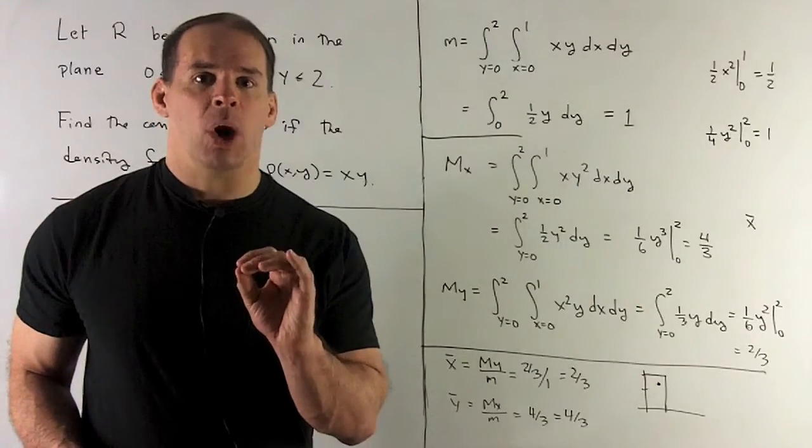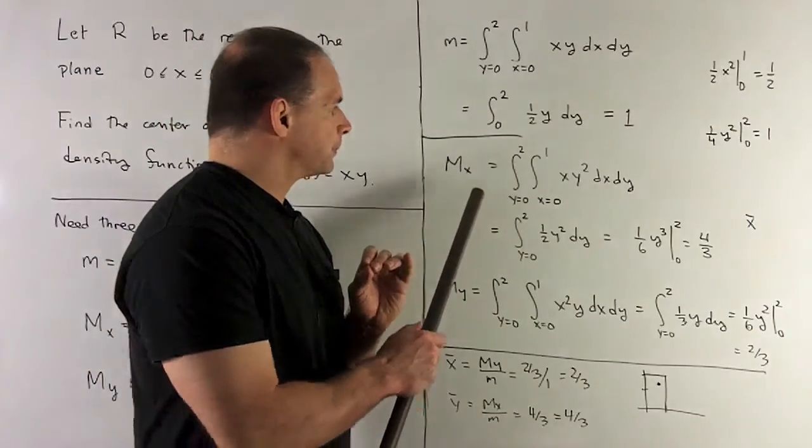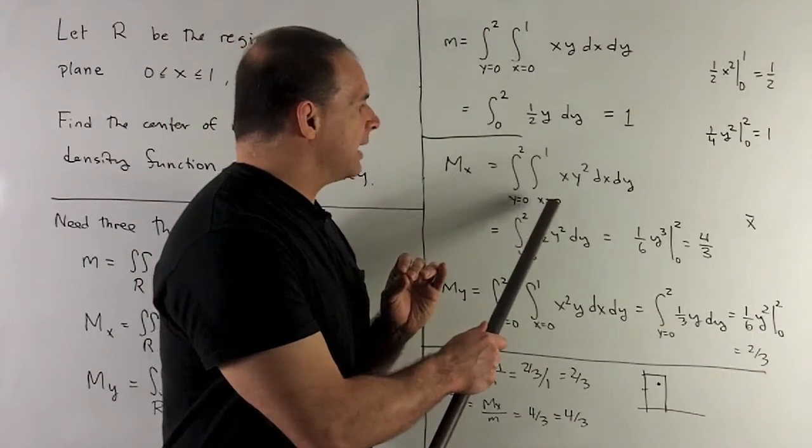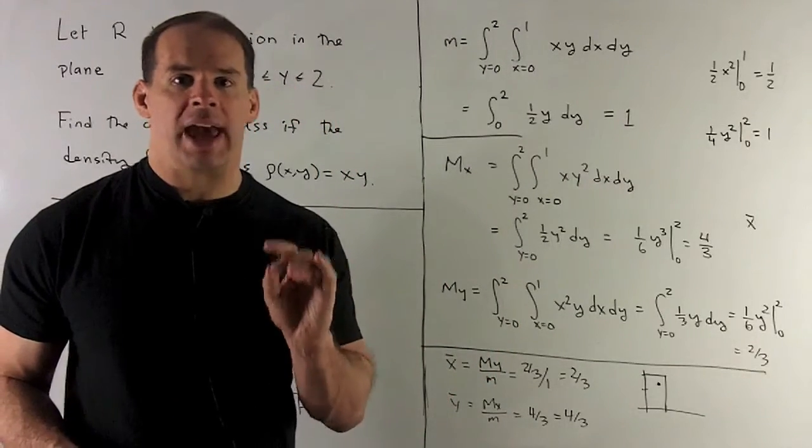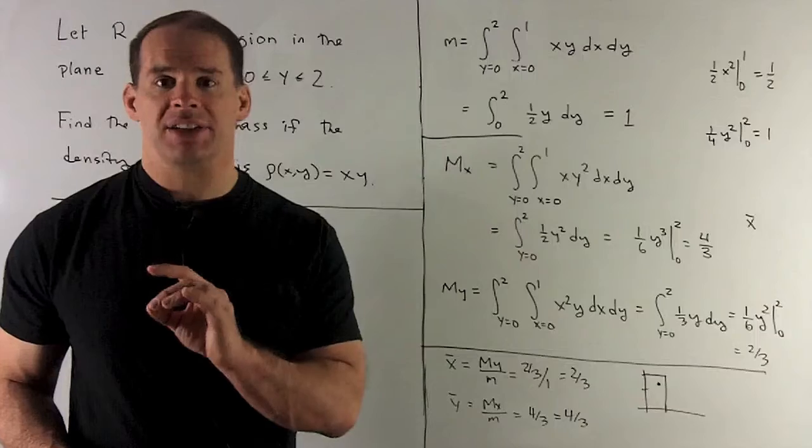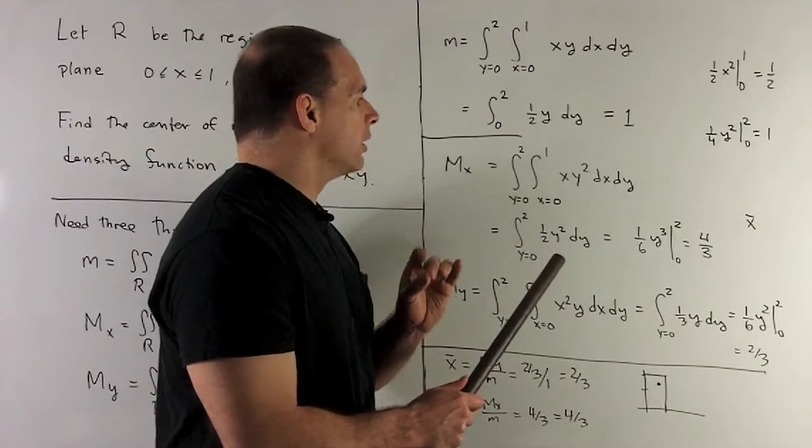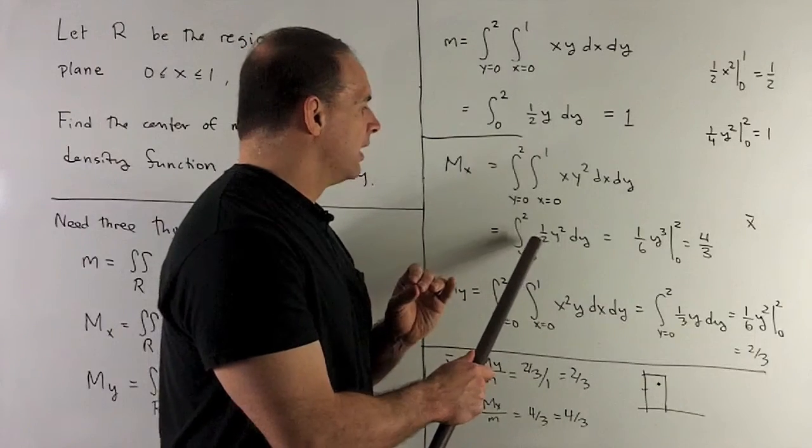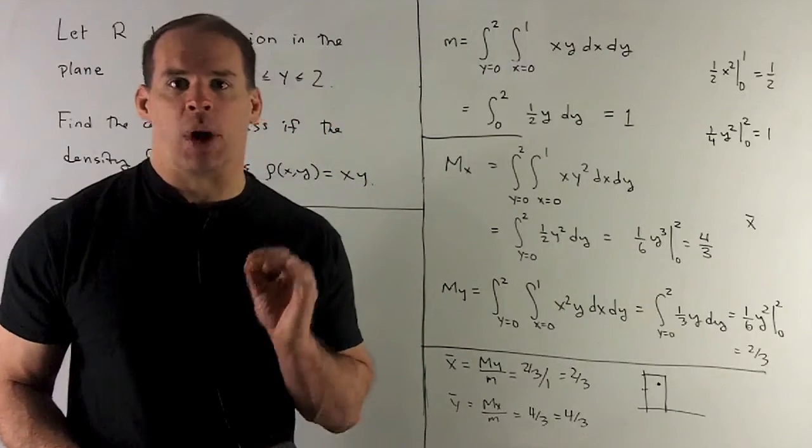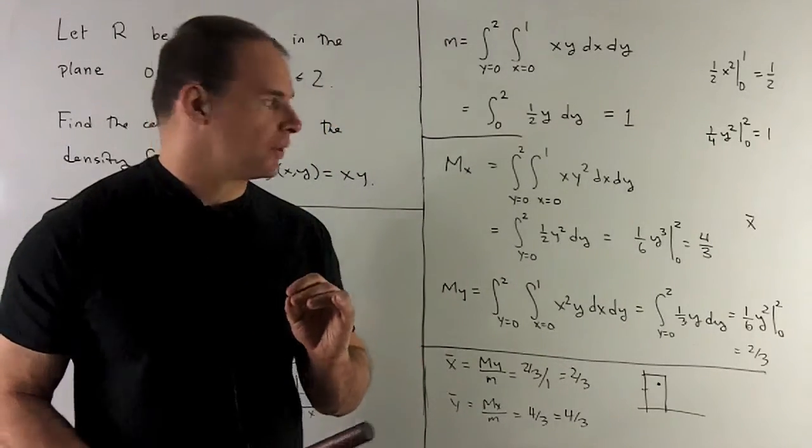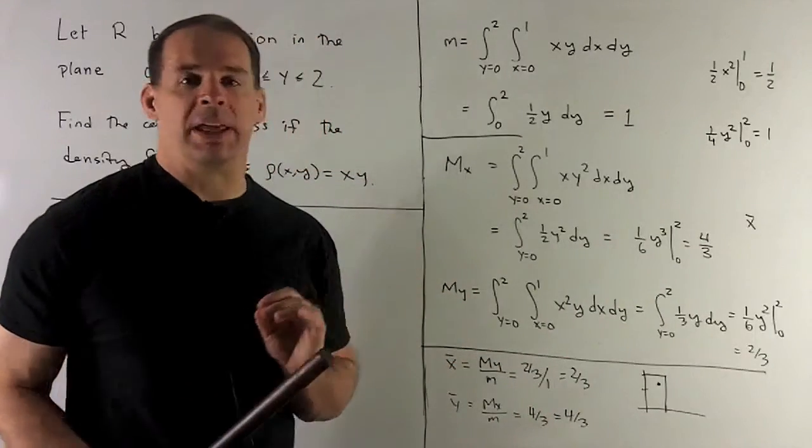All right, first, let's do the moment in x. So this is going to give me y bar. Here, same idea. We're going to take x, y, our density, multiply by y. Remember moment in x, take y times the density. So when we do this, we're going to get the 1 half x squared. From 0 to 1 gives me a half. And then I'm doing 1 half y squared with respect to y. That'll give me 1 sixth y cubed. Put your 0 in, put your 2 in, take the difference. And then you wind up with 4 thirds. So that's going to be y bar.